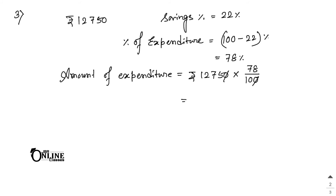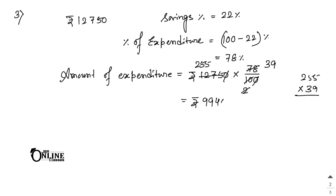Dividing 1275 by 5 gives 255, and 10 by 5 gives 2. Then 78 divided by 2 equals 39. So the expenditure = 255 × 39 = ₹9,945. That is your final answer.